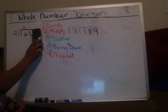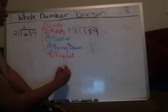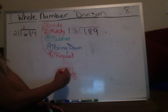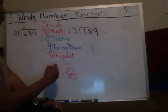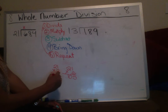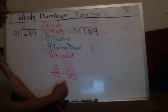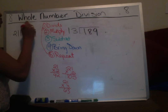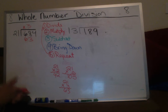So we cover up the four at the end. Can I put 21 into 68? Yes. But how many times? We might start with five — no, that's way too big. Five times one is five, five times two is ten. Let's try two: 21 times two is 42. Let's try three: three times one is three, three times two is six. So 21 times three is 63.